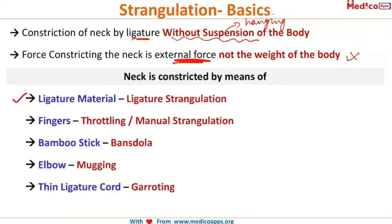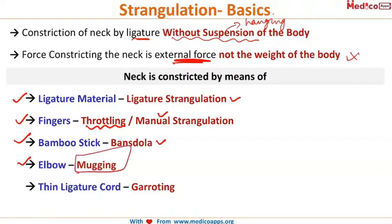The neck is constricted by means of either a ligature material — called ligature strangulation — or by fingers, which is called throttling or manual strangulation. If a bamboo stick is used, it is known as bansdola. If the elbow is used, it is called mugging. When a thin ligature cord is used, it is called garroting.